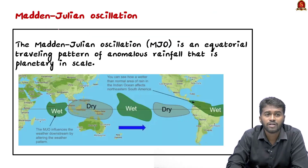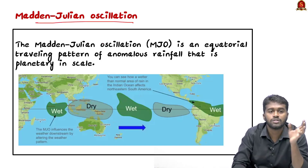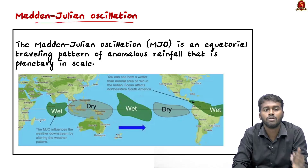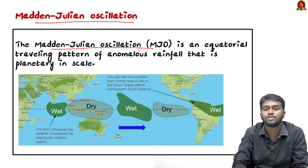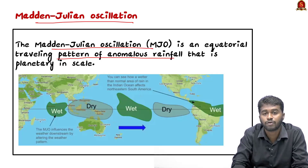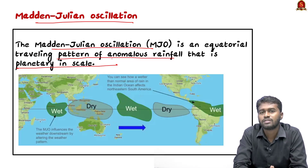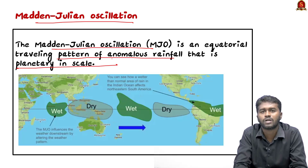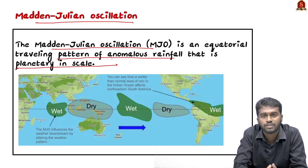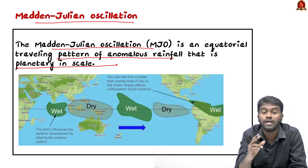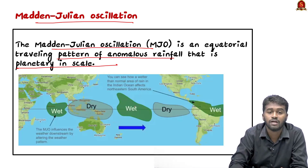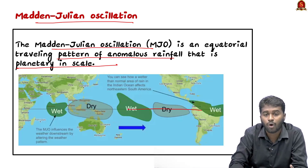The Madden-Julian Oscillation — let's look at its definition from the Press Information Bureau. The Madden-Julian Oscillation is an equatorial traveling pattern of anomalous rainfall that is planetary in scale. Before decoding this definition, we can simply understand it as an atmospheric disturbance that travels across the world along the equator.